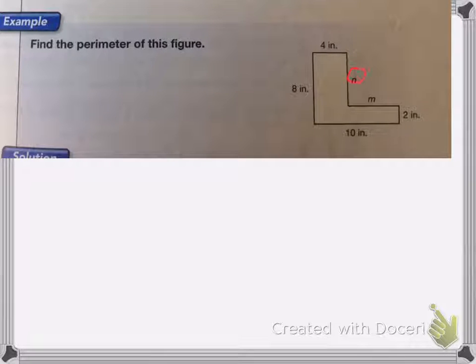So here I have, as you can see, I have two missing sides. Now, they will not always label them for you. You'll have to find them on your own. It could just be two sides that don't have any numbers or labels. In this case, they did. So I need to figure out what N and M are before I can figure out what the perimeter is.